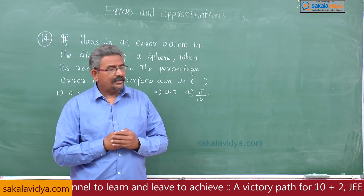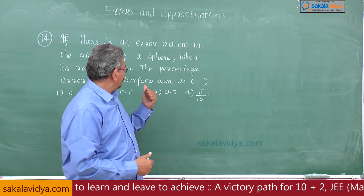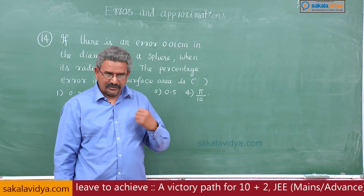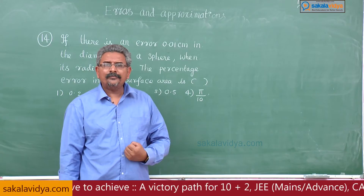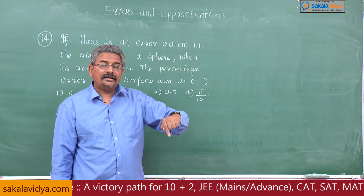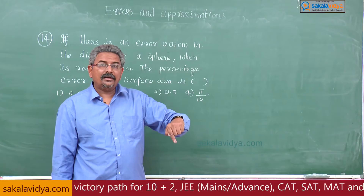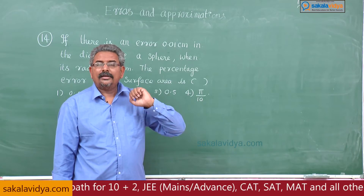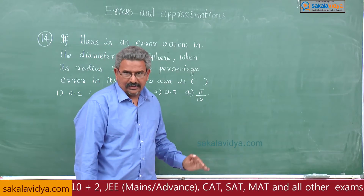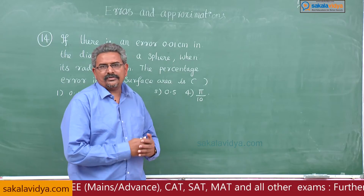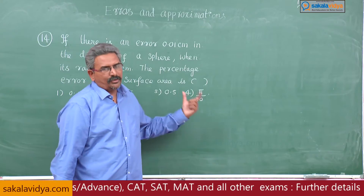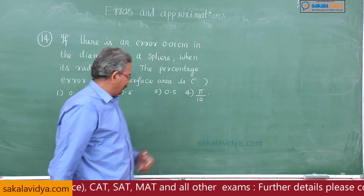The percentage error in the surface area is equal to 2 times the percentage error in the diameter, because the dimension of the diameter term is 2. Let us proceed with the problem.